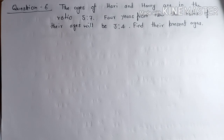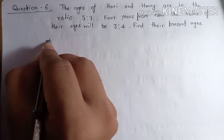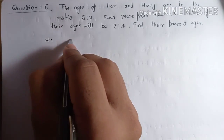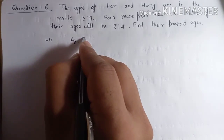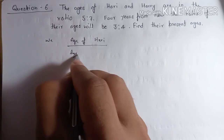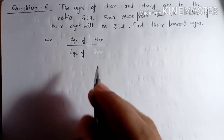Now we have question number six: the ages of Harry and Harry are in the ratio five to seven, and four years from now the ratio of their ages will be three to four. Find their present ages. So the ratio of ages of Harry upon Harry is five upon seven.